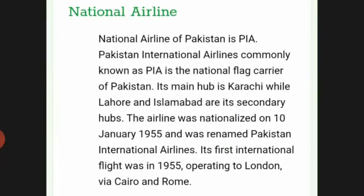The national airline of Pakistan is PIA — Pakistan International Airlines — the national flag carrier of Pakistan. Its main hub is Karachi, while Lahore and Islamabad are its secondary hubs. The airline was nationalized on 10 January 1955 and renamed Pakistan International Airlines. Its first international flight was in 1955, operating to London via Cairo and Rome.